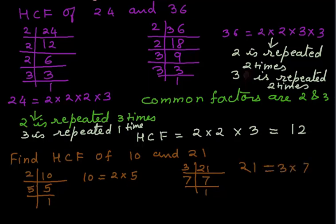Now from these factors 2, 5, 3, and 7, there is no common factor between 10 and 21. So in such cases, HCF is 1. Thank you.